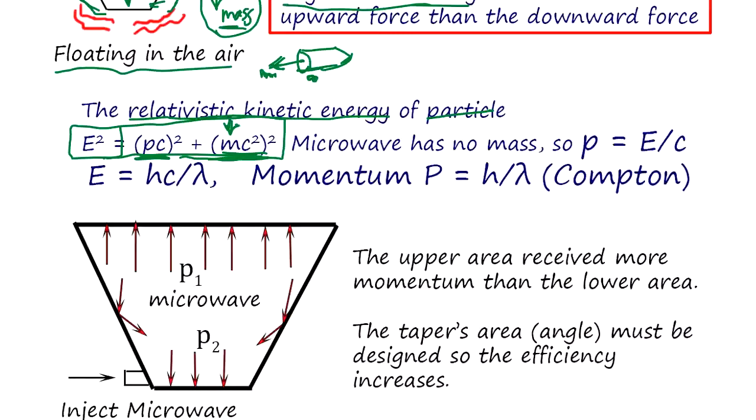When there's no mass like microwave or light, then momentum becomes energy over c. Since energy is the wave energy, Compton's constant times light speed over lambda, the wavelength, momentum is given by this. Because this is exactly the same as Compton's.